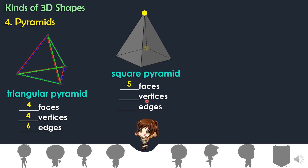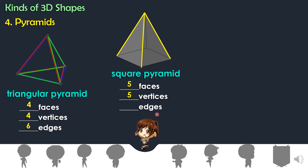How about the vertices? One, two, three, four, five. The square pyramid has five vertices or corners. How about the edges? Let us count: one, two, three, four, five, six, seven, eight. The square pyramid has eight edges.